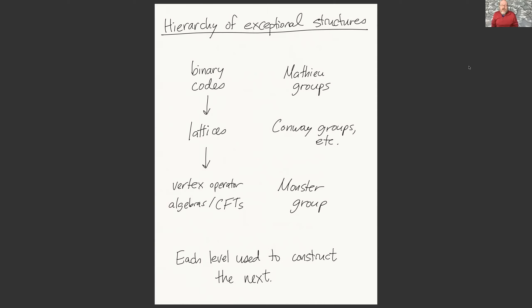You then have groups like Conway groups that act on these geometric objects. At a third level, using lattices you can build physics objects—conformal field theories and vertex operator algebras, which are a mathematical formulation of certain chiral CFTs—and you get new sorts of groups acting on these exceptional structures, like the Monster finite simple group. So basically the same way we progressed from binary error correcting codes to Euclidean sphere packings, you can think of this as following the process one step further.